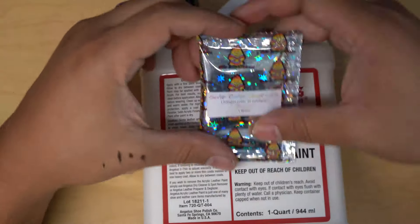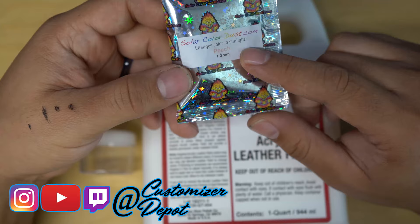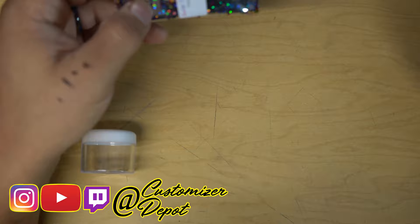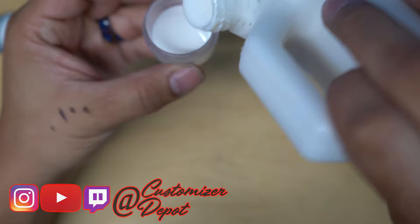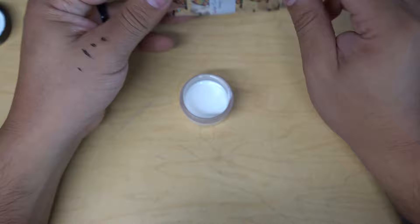What is going on everybody, Kenny from Customizer Depot here. Today I have another review for you for the Solar Color Dust, the UV and solar changing pigment. This color is peach. Let me just read a couple of things off for you guys so you can understand a little bit more about the Solar Color Dust.